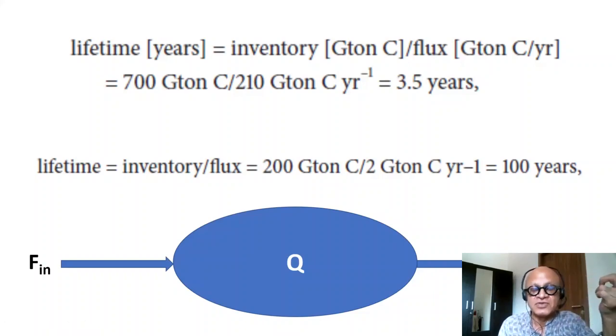If we take, for example, the atmosphere of 700 gigaton storage, which is double the ppm, as you remember, divide by the flux of 210 gigaton carbon per year, that gives you a short three and a half year lifetime.